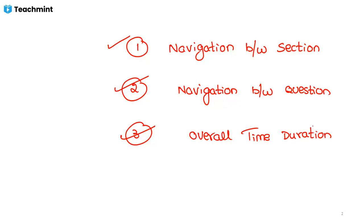All three or four sections together share the overall time duration — that is a good advantage. If you are taking the test on the Co-cubes platform, it gives you good flexibility, similar to a normal paper test where you can move from one question to another or from one section to another.